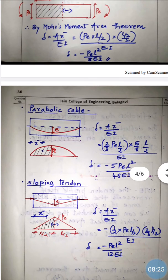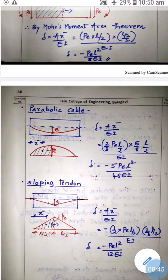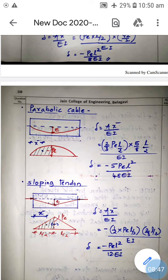For a parabolic cable, the bending moment diagram is parabolic. Using δ = A·x̄ / EI, the area of the half part of the parabola is (2/3) · Pe · (L/2). The centroid distance is (5/8) · (L/2), since the centroid of a parabola is at 5/8 of its length from the base. After calculation, the deflection is δ = −5PeL² / 48EI.